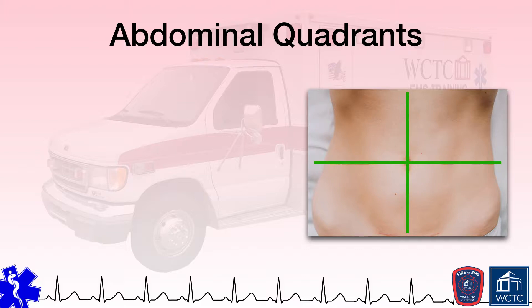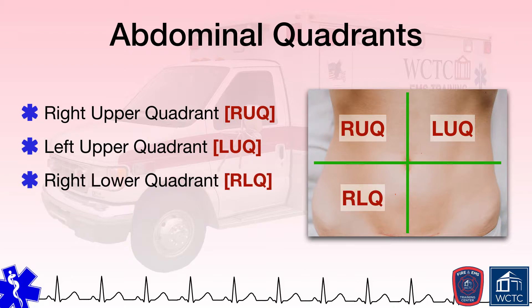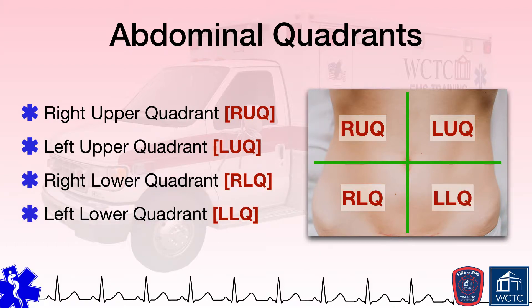Remembering from your EMT training and our previous module on organ systems, when referring to lateral landmarks on patients, we must use the patient's right and left, not our right and left. Thus, the four quadrants of the abdomen are simply referred to as the right upper quadrant, left upper quadrant, right lower quadrant, and left lower quadrant.